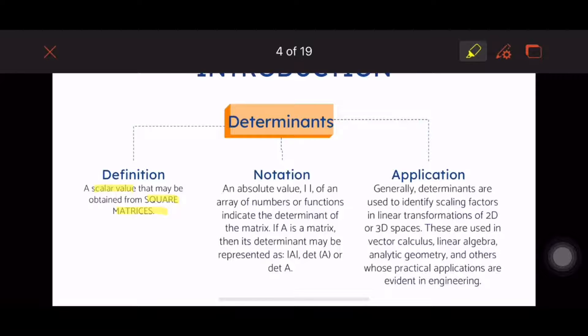For the notation, an absolute value will indicate obtaining the determinant of the matrix. In the introduction of matrices, I mentioned you can enclose them in parentheses, box brackets, or braces. In other references, they allow different notations, but not absolute value because the absolute value will indicate obtaining the determinant. If you have a matrix A, you'll know we're obtaining its determinant because of its representation as absolute value of A.